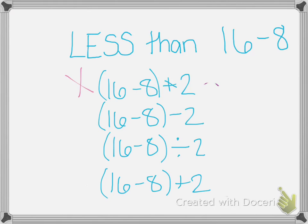16 minus 8 minus 2. If we subtract 2, our answer is going to get smaller. So this one is correct. 16 minus 8 divided by 2. When we divide things, our answer also gets smaller. So that's correct.